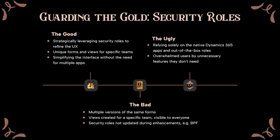Security roles can be your best friends — use them as a strategic tool to refine UX. Multiple versions of the same form can confuse users, so use security roles to only show the forms, views, or dashboards that are built for a specific user group. I tend not to rely too much on native apps or out-of-the-box roles, as they might allow access to unnecessary features and take user focus elsewhere. Always aim to properly define and update those roles.